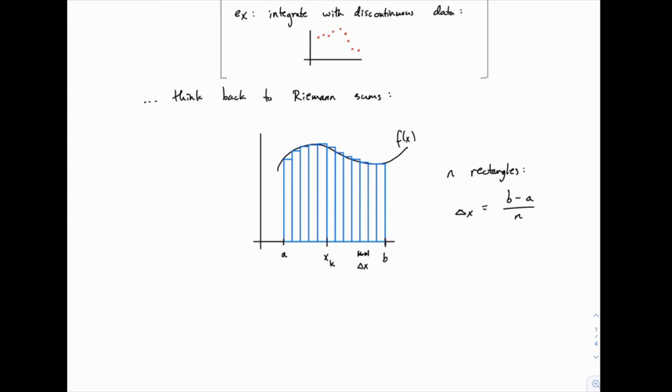So for instance, if a was 0 and b was 4, and we wanted to divide it into 8 rectangles, delta x would be 0.5 or 1 half. So delta x is simply the distance from a to b divided by n. And then the integral from a to b of this function is approximately equal to the sum where k ranges from 1 up to n of f of x sub k.